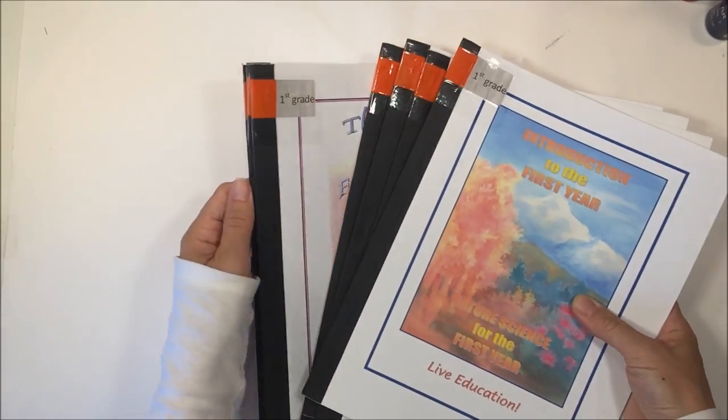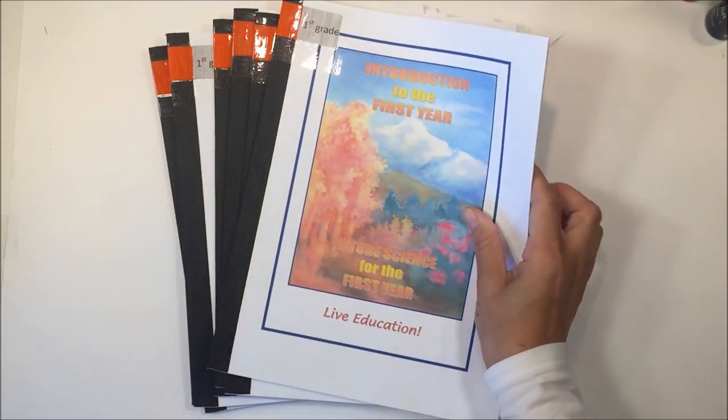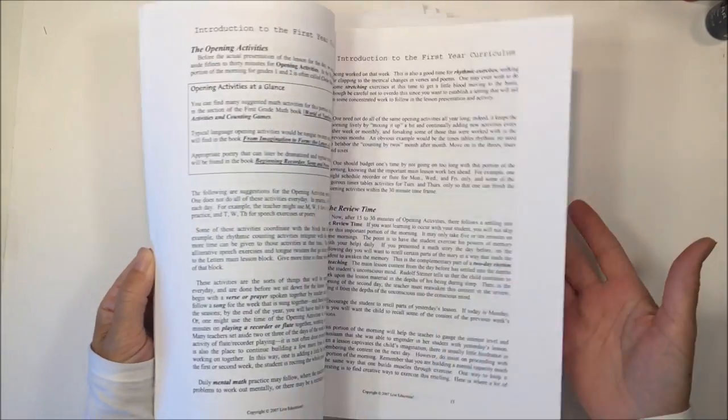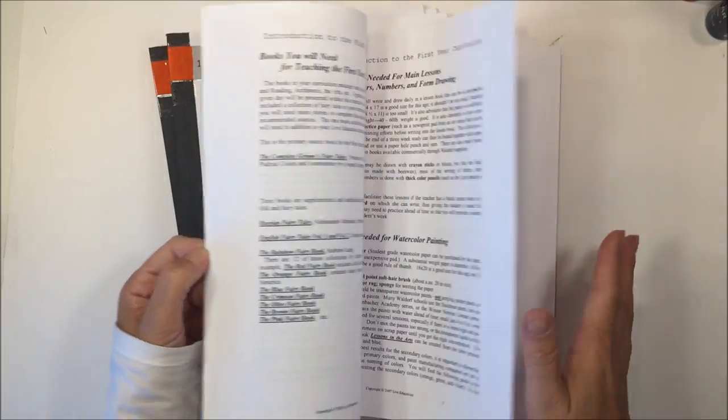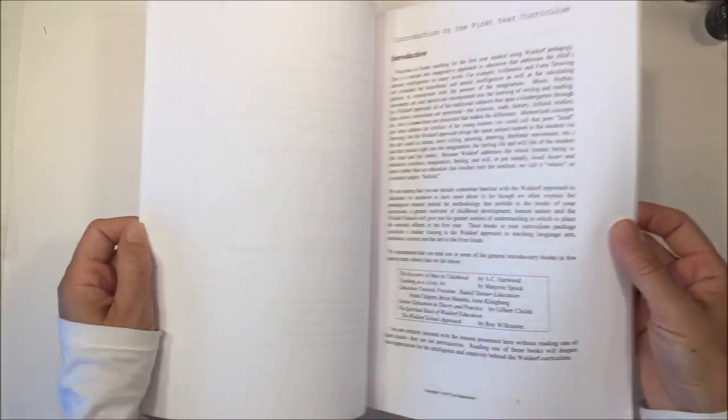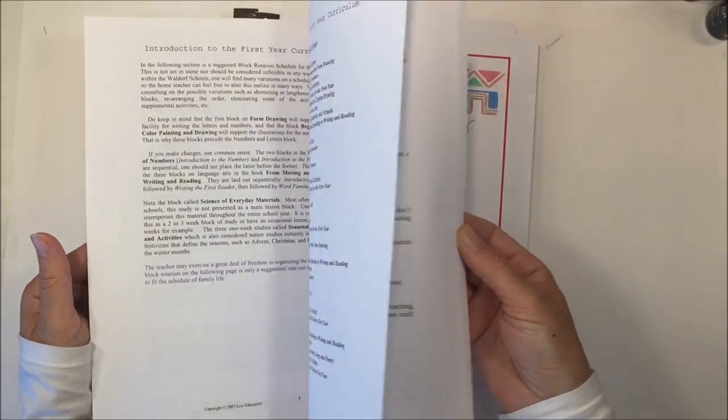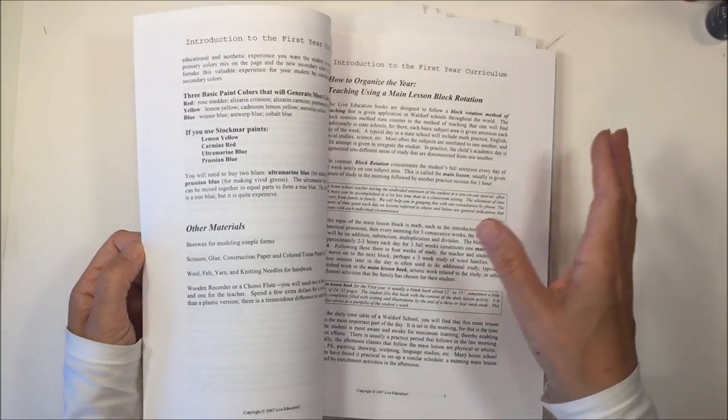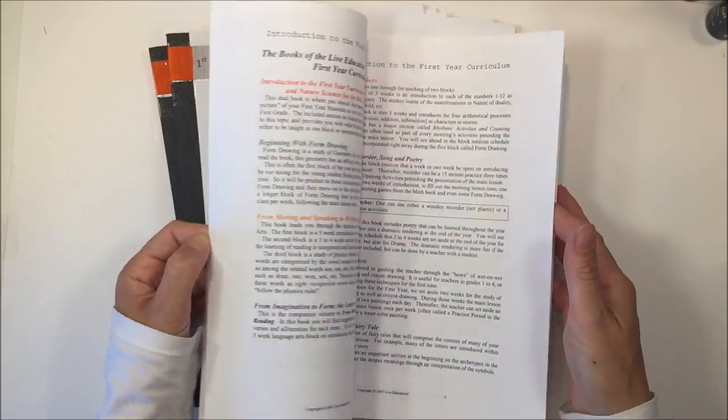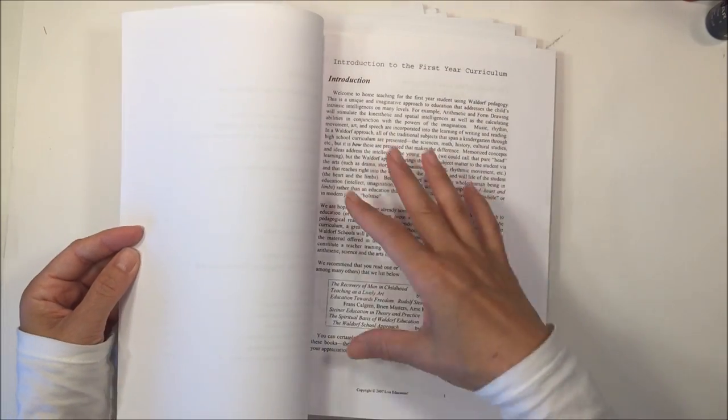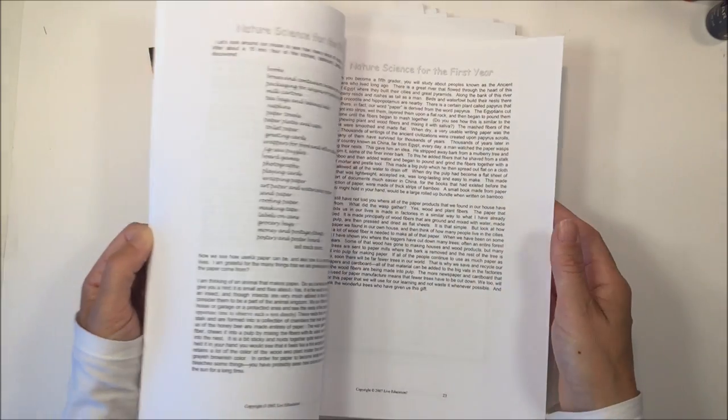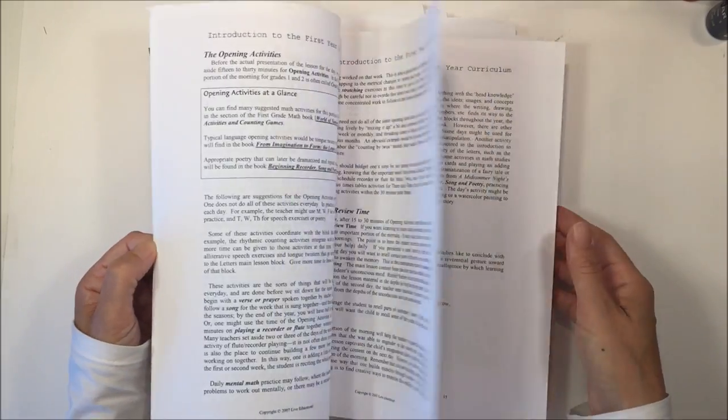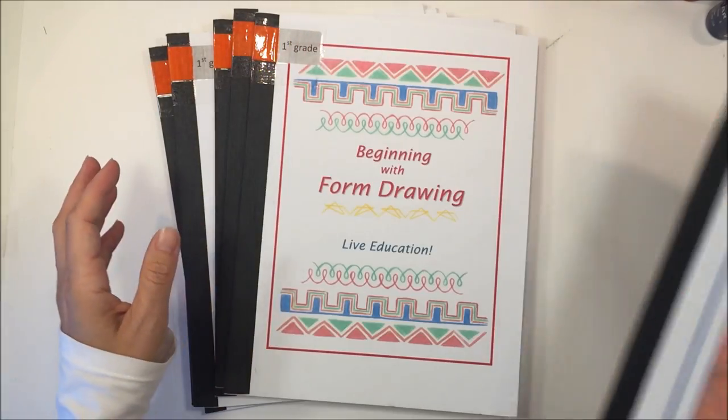For first grade, you get eight books and the first one is an introduction to the first year. Sometimes you might overlook going through the introduction, but I highly advise you to read through this because it gives you so many ideas and tips on how to use the curriculum and how to form your day. The way that the Waldorf curriculum uses main lesson blocks is really different than other curricula, and it goes through explaining how to do a main lesson block and what activities you're doing daily.